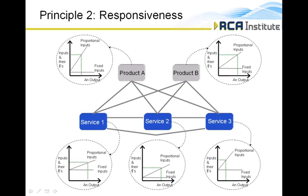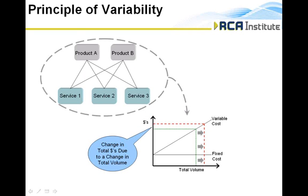For clarity, let me contrast the principle of responsiveness with the principle of variability, which is more commonly used but creates problems in decision support. Variability is reflected in a traditional cost-volume-profit, or break-even, analysis, where every cost in the organization is evaluated as fixed or variable in comparison to the total output of the organization. Remember: responsiveness defines fixed or proportional in relationship to an individual resource pool's output. Analysis against final output of an organization produces very limited information for marginal decision-making, because you know very little about the interactions of work groups in your organization's value-creating processes. You will rapidly conclude that most costs are fixed.